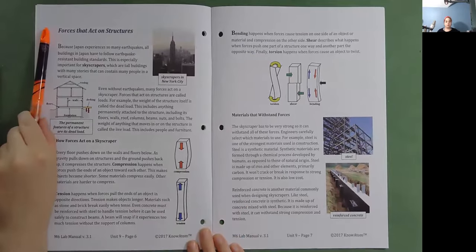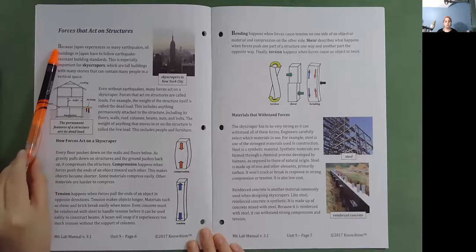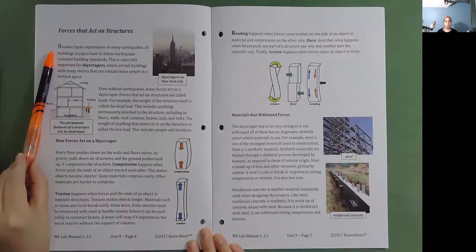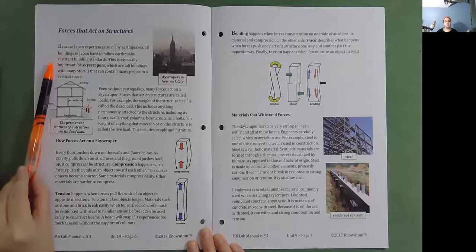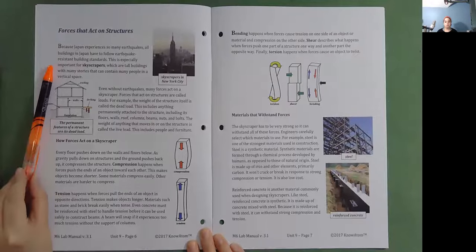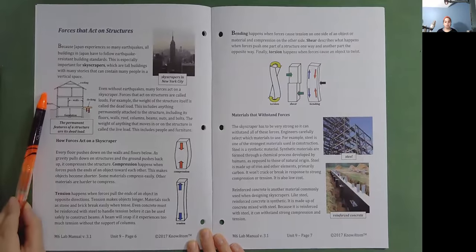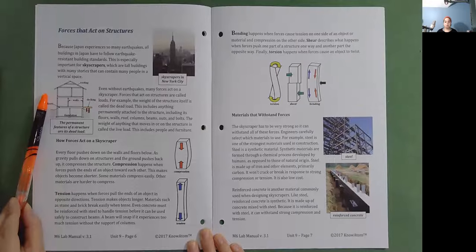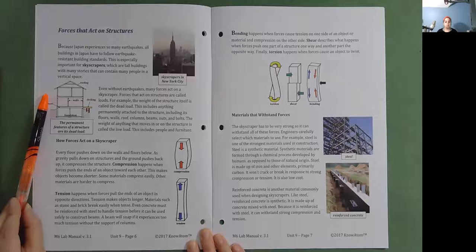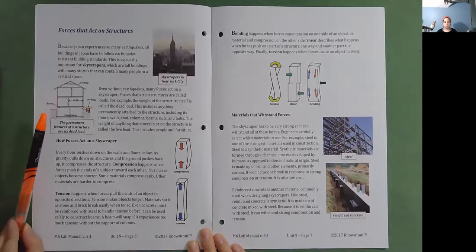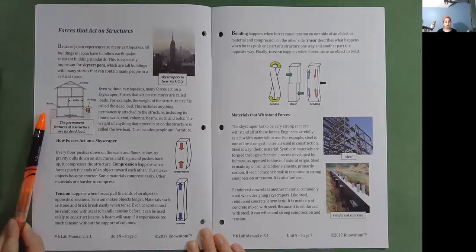Forces that act on structures. Because Japan experiences so many earthquakes, all buildings in Japan have to follow earthquake-resistant building standards. This is especially important for skyscrapers, which are tall buildings with many stories that can contain many people in a vertical space. Even without earthquakes, many forces act on a skyscraper. Forces that act on structures are called loads. For example, the weight of the structure itself is called the dead load. This includes anything permanently attached to the structure, including its floors, walls, roof, columns, beams, nuts, and bolts. The weight of anything that moves in or on the structure is called the live load. This includes people and furniture.